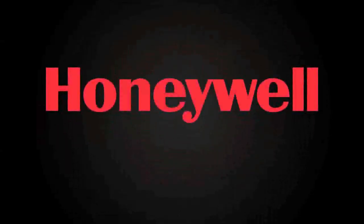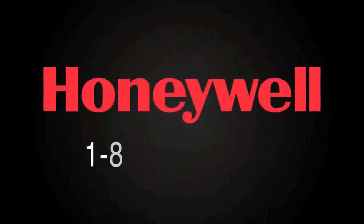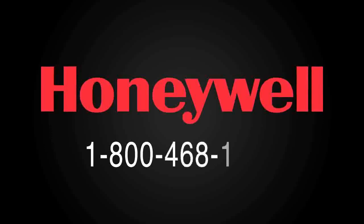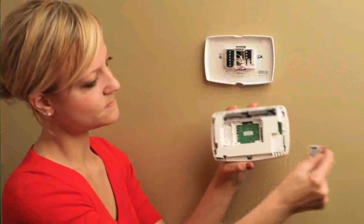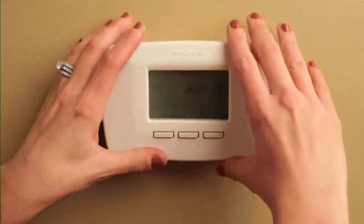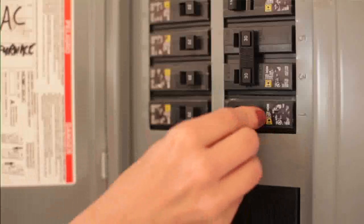Remember, if you need help at any time, call 1-800-468-1502 for assistance. Go ahead and pop the batteries in and remove the tab. Now attach your new thermostat onto the wall plate. Turn the system power back on. That's it.